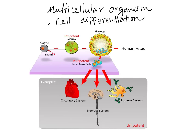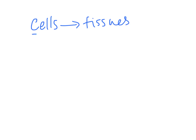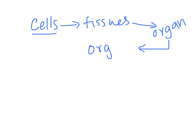It is really important to understand that cells specialize for specific functions as multicellular organisms develop. A group of special cells with similar structure and function makes a tissue, and a collection of different types of tissues makes an organ. A collection of organs doing a similar job gives rise to an organ system, and a collection of organ systems gives rise to an organism.